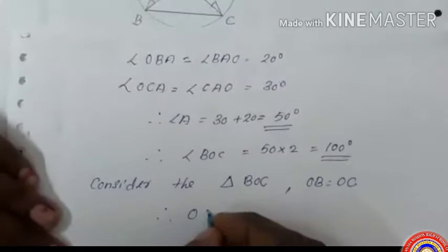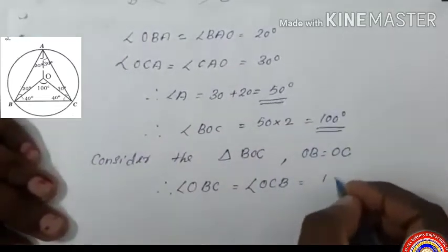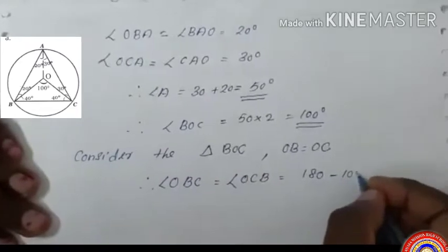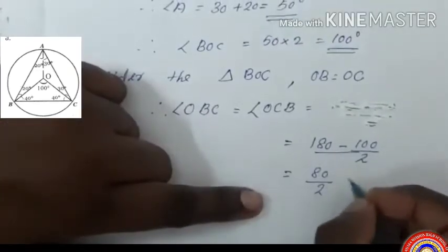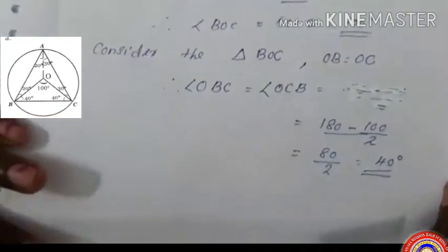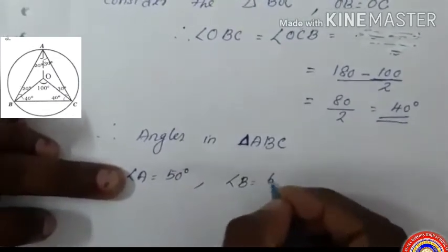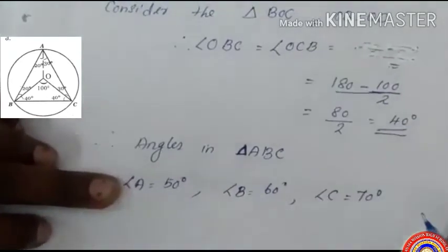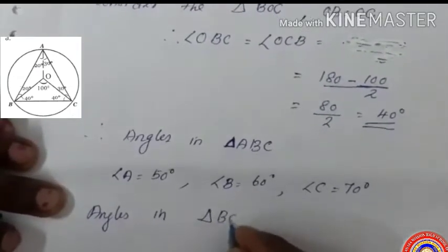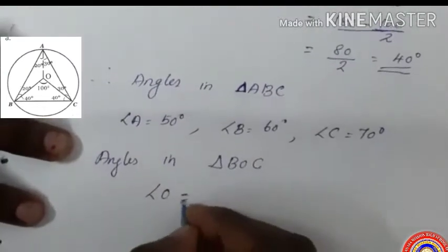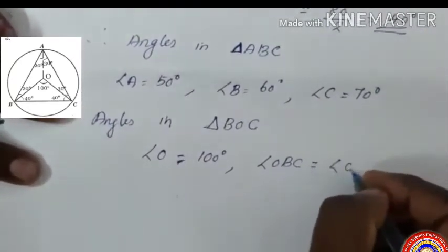Angle OBC equals angle OCB equals (180 minus 100) divided by 2, which equals 80/2 equals 40 degrees. So angle OBC equals angle OCB equals 40 degrees. Therefore, the angles in triangle ABC are: angle A equals 50 degrees, angle B equals 60 degrees, angle C equals 70 degrees. The angles in triangle OBC are: angle O equals 100 degrees, angle OBC equals angle OCB equals 40 degrees.